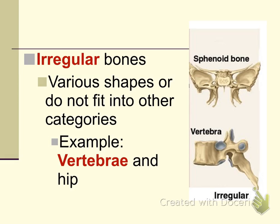The irregular bone category basically covers any bone that doesn't fit into the other three categories. Bones in the irregular bone category include all of the vertebrae, the hip bones or coxal bone, and the sphenoid and ethmoid bones which make up the floor of the skull. All of those bones belong to the irregular bone category.